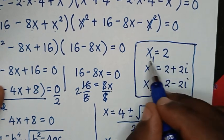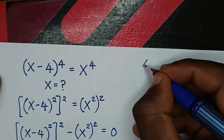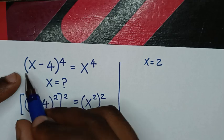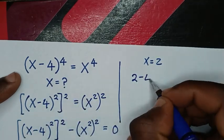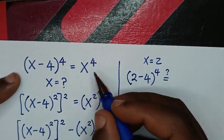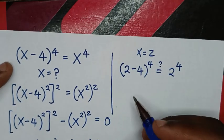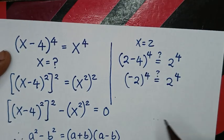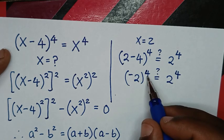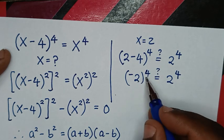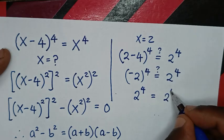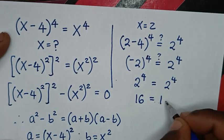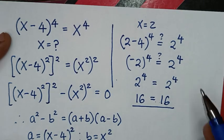Now let's check the real solution x equals 2. Substituting into the original problem: (2 minus 4) to the power 4, is it equal to 2 to the power 4? That gives (negative 2) to the power 4. Since a negative number raised to an even power is positive, this equals 2 to the power 4, which is 16. So 16 equals 16 — left side equals right side, confirming x equals 2. The two complex solutions are also correct.